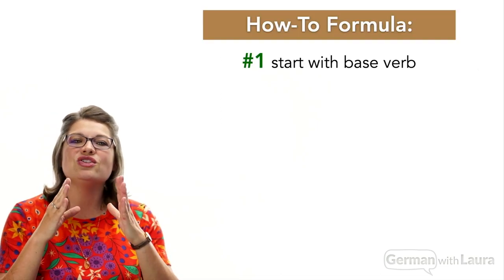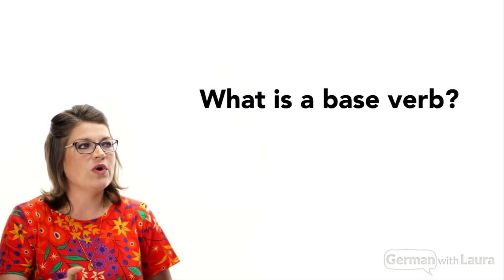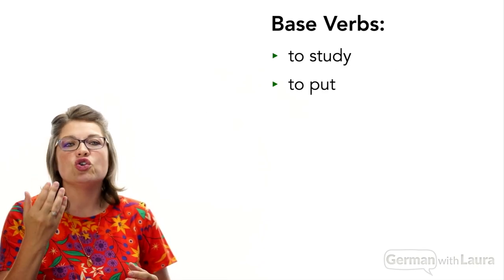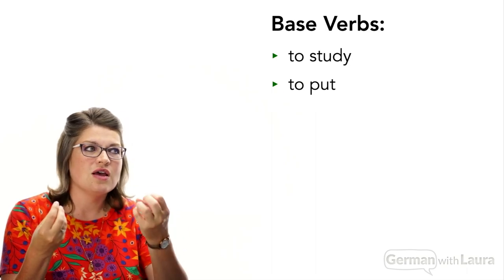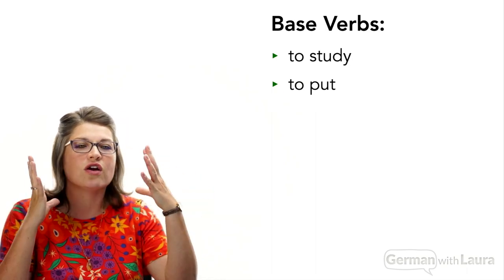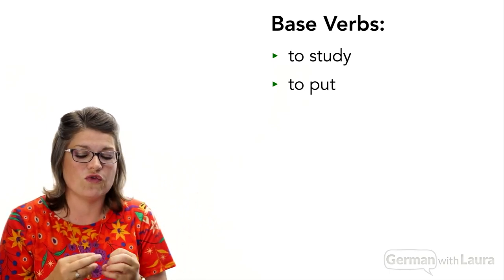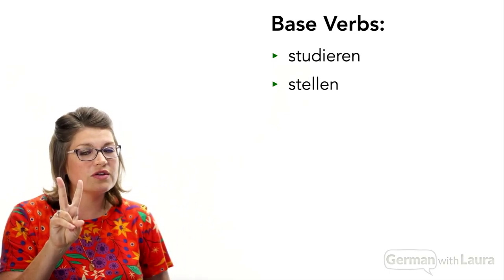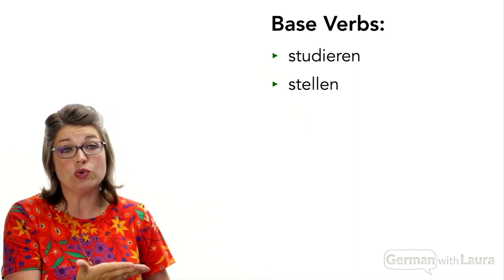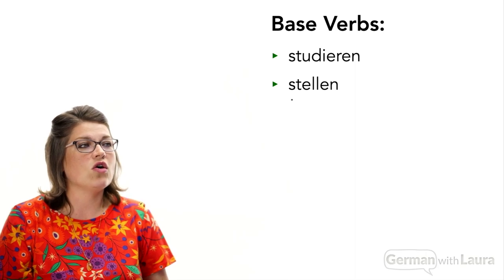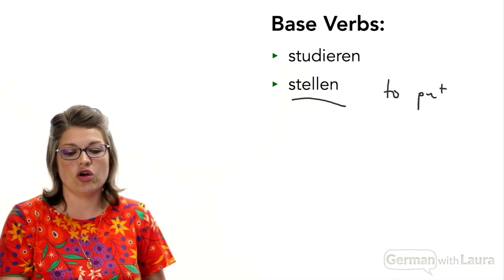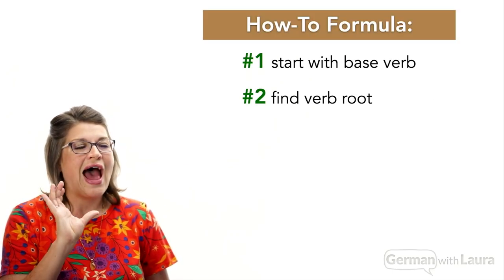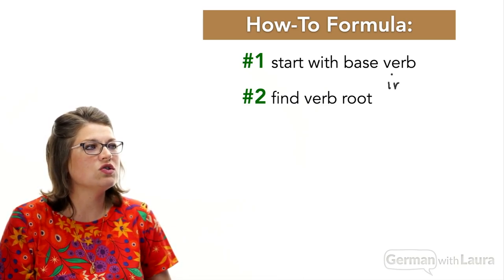The first step is to start with the base verb, which in English is always 'to' plus the main verb — to study, to put, to be. That is our base verb, also called the infinitive verb. In German, we don't have two words to work with — it'll be just one word, like studieren or stellen, which means 'to put' in German.